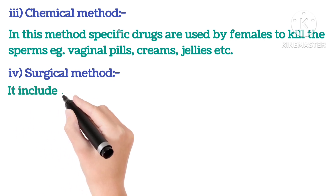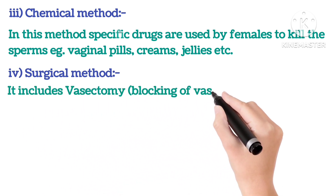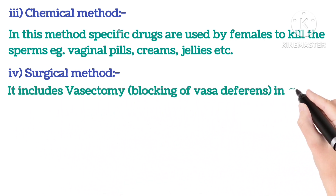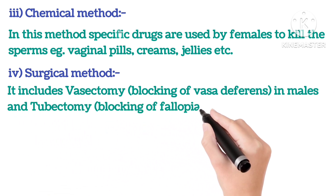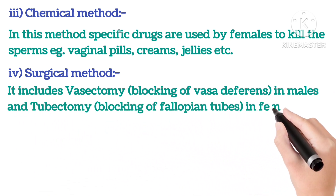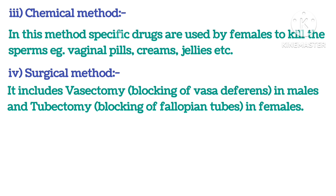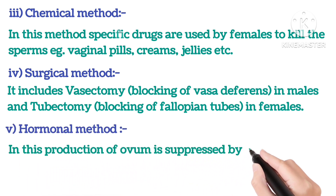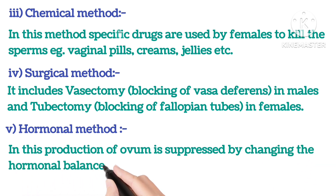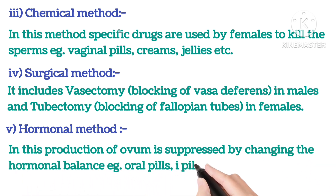Fourth, surgical method — it includes vasectomy (blocking of vas deferens in males) and tubectomy (blocking of fallopian tubes in females). Fifth, hormonal method — production of ovum is suppressed by changing the hormonal balance, for example: oral pills and IUDs, etc.